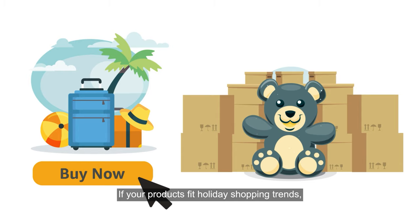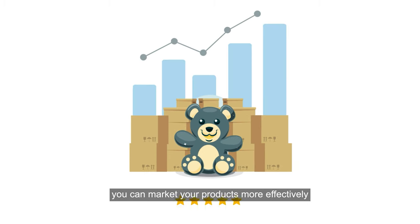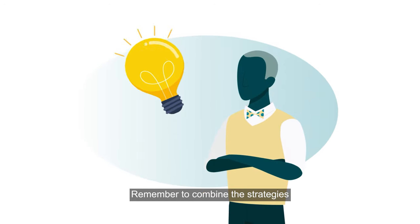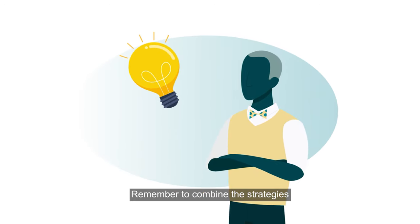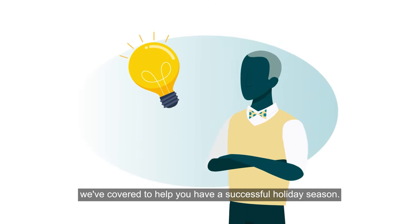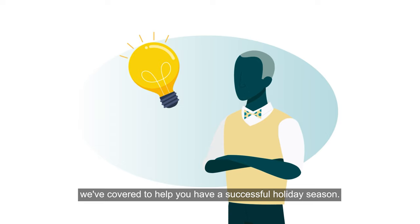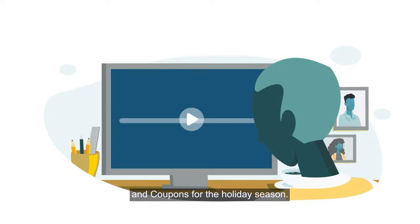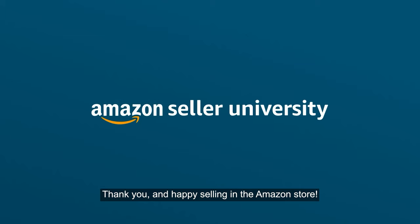Combining coupon discounts with sponsored products can help customers more easily find your products and help increase your sales. If your products fit holiday shopping trends, you can market your products more effectively by focusing on popular search terms. Remember to combine the strategies we've covered to help you have a successful holiday season. This concludes the training on advertising and coupons for the holiday season. Thank you and happy selling in the Amazon store!